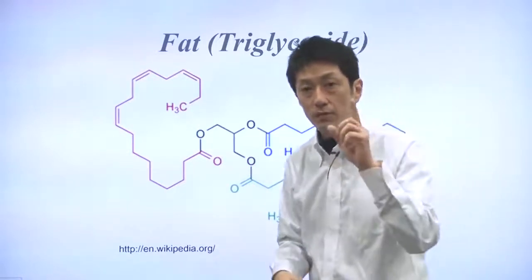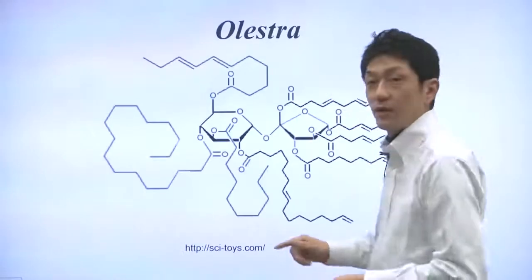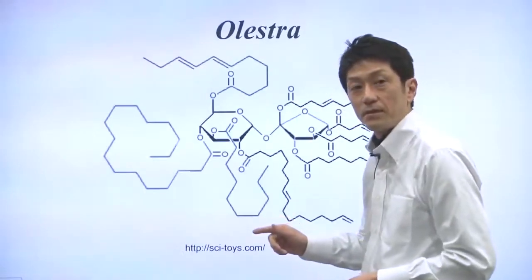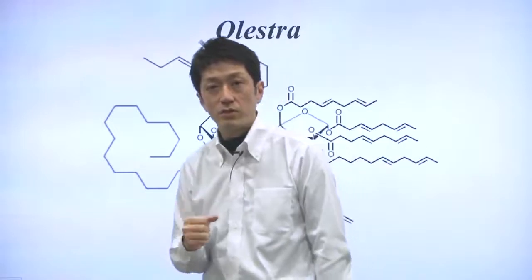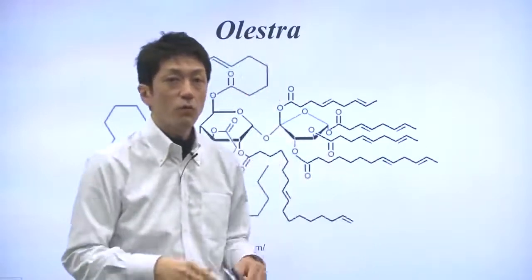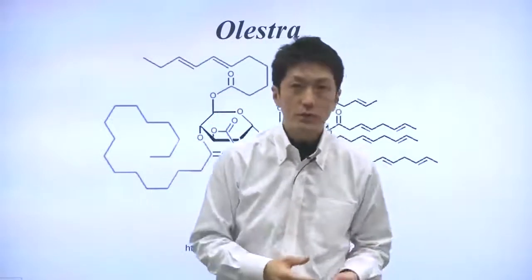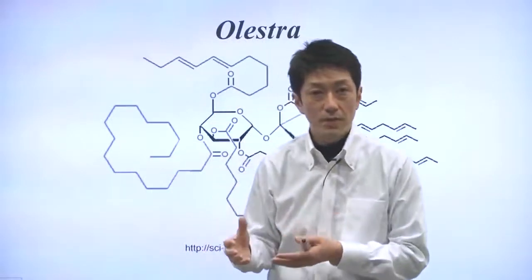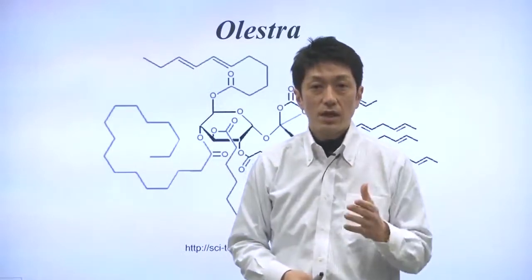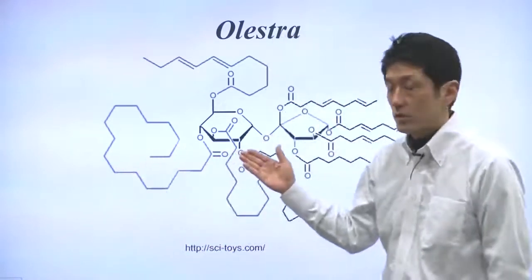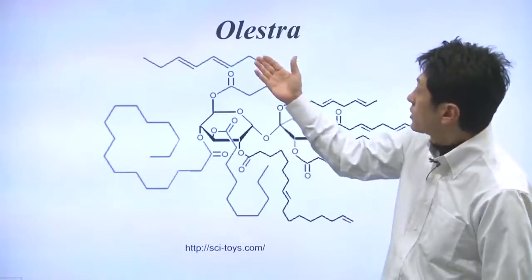Now I will tell you about the surprising molecule I promised. In 1968, Procter and Gamble researchers were looking for a way of helping premature babies. They wanted to increase the premature babies' intake of fat. What they synthesized was this sucrose polyester molecule named Olestra.